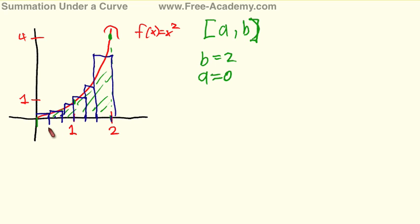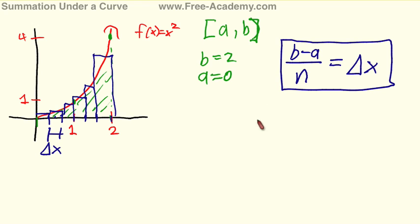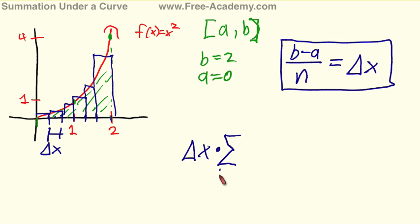In each one of these situations, we're going to have a width for each rectangle that we're going to denote delta x. You can see that if you take the difference between B and A and divide it by the number of rectangles, that gives you delta x. So we're going to have a multiplication of the width of each rectangle, delta x, and we're going to multiply it by the summation of the height of each rectangle.